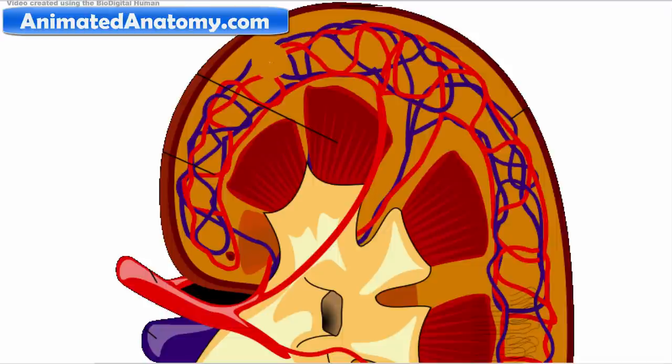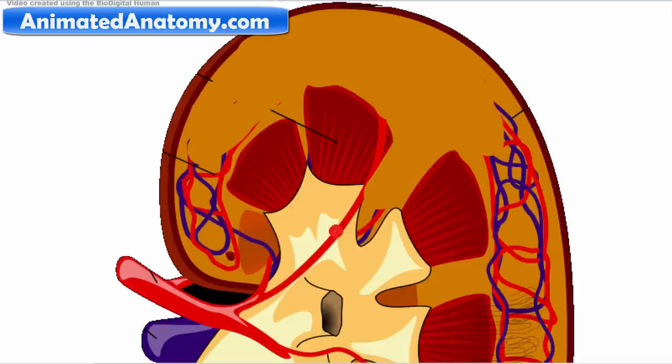First I will remove these arteries that are confusing you. So here you have the interlobar artery which turns into an arcuate artery around the medulla. And then we have the smaller arteries, the cortical radiate arteries.